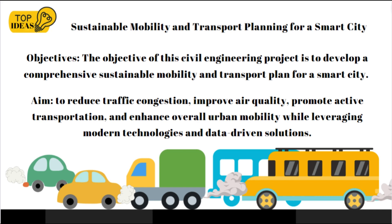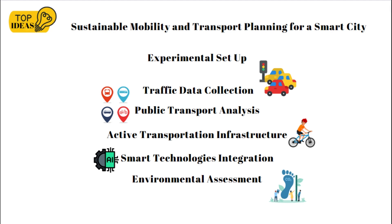The next project is Sustainable Mobility and Transport Planning for a Smart City. The objective is to reduce traffic congestion, improve air quality, promote active transportation, and enhance overall urban mobility while leveraging modern technologies and data-driven solutions. The experimental setup involves traffic data collection using real-time and historic traffic data from sensors, GPS devices, and traffic management centers; public transport analysis evaluating the efficiency and accessibility of existing systems including buses, trains, and light rail; active transportation infrastructure assessment; and smart technologies integration exploring intelligent traffic signal control and smart parking solutions.